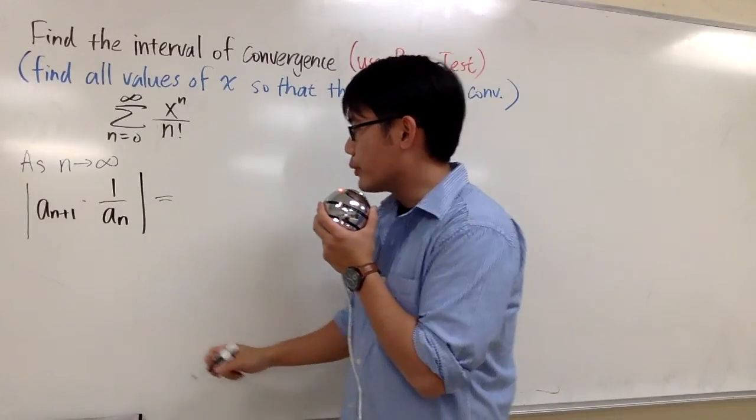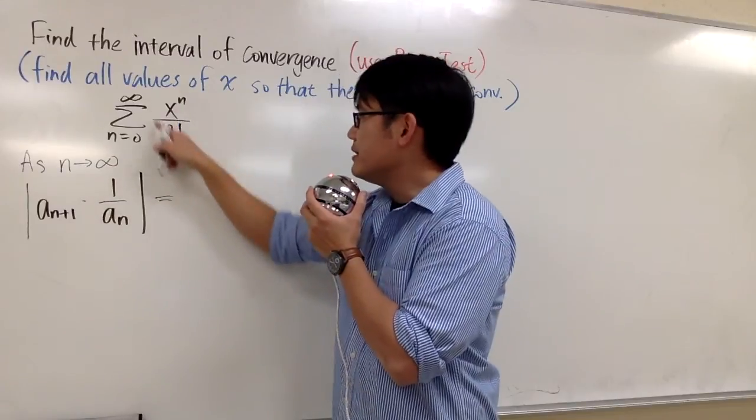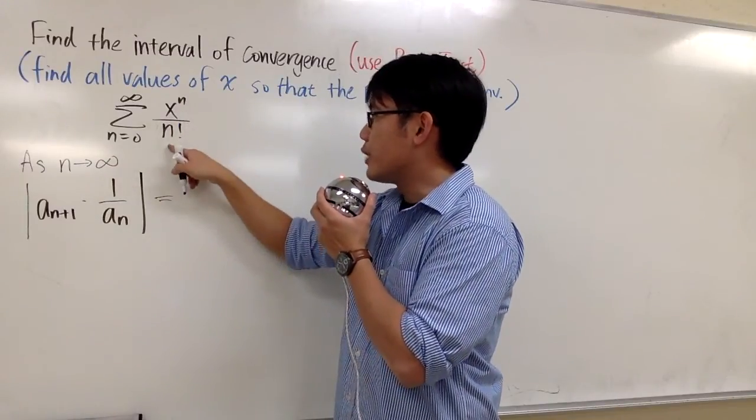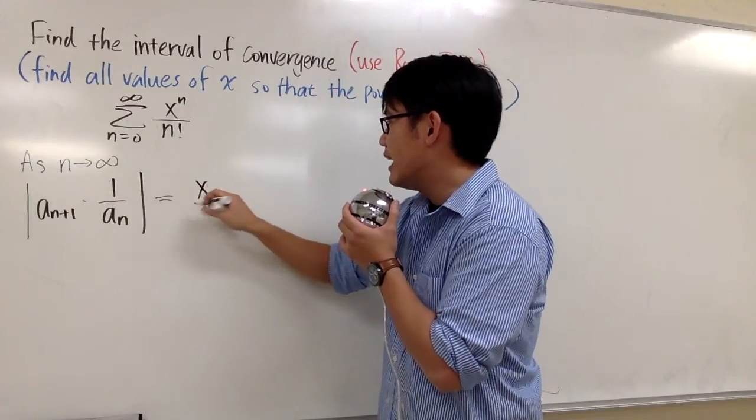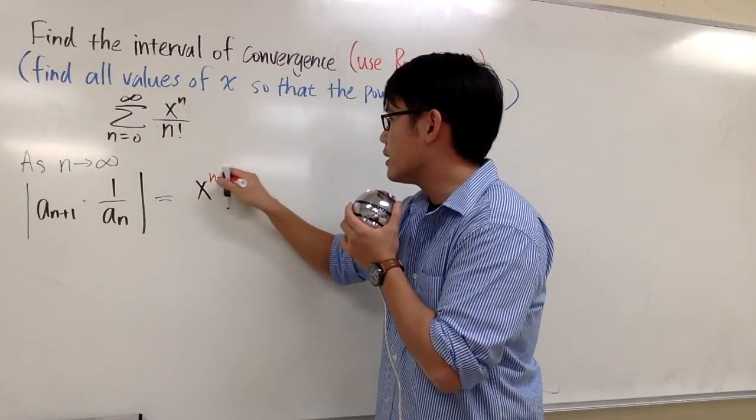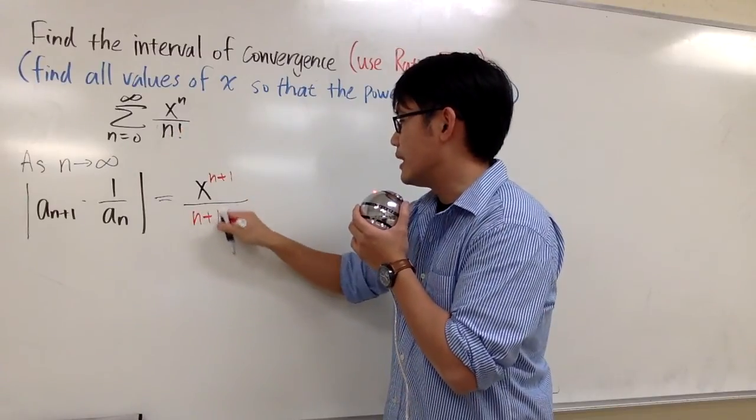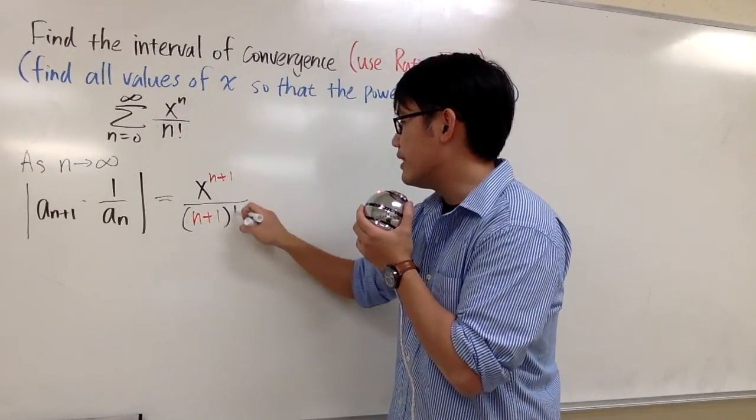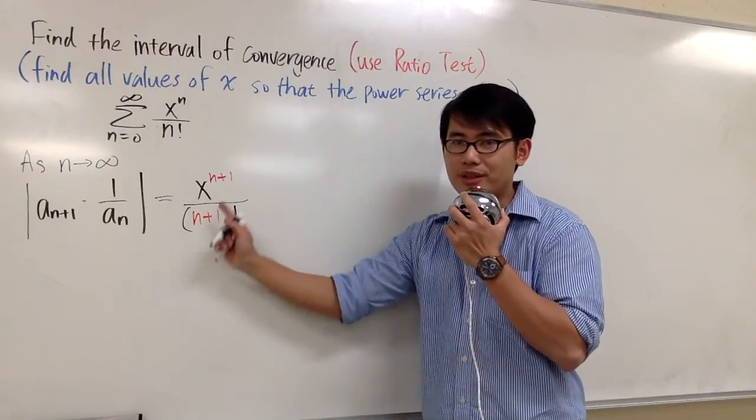Alright, this right here is equal to, we will first do some algebra. a_n+1, this is the a_n, so instead of all the n right here, we'll just change that to n+1. We will end up with x to the n+1 over n+1 factorial. And let's put the n+1 in the parentheses, and then we have the factorial on the outside. This is the a_n+1 term.